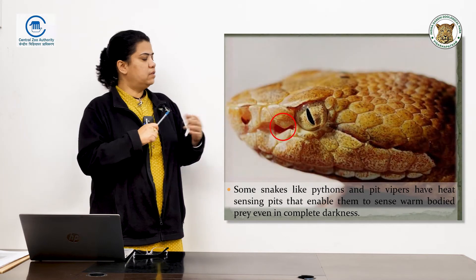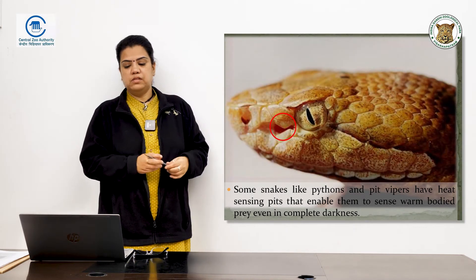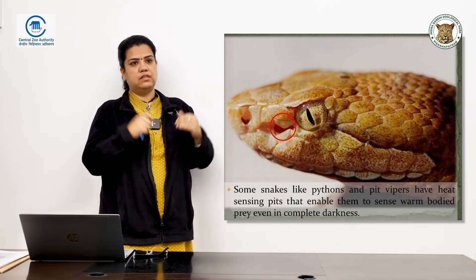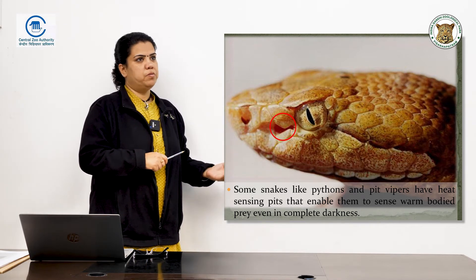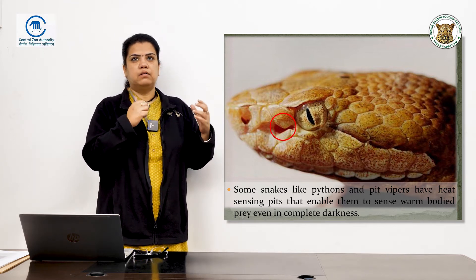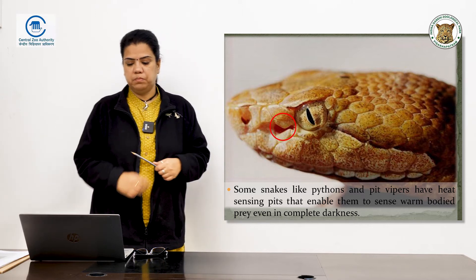Some snakes have very distinct thermal sensing pits located just below the eyes, between the eyes and the nostrils. These pits pick up heat signatures from predators or prey, allowing the snake to identify heat signatures even in complete darkness.